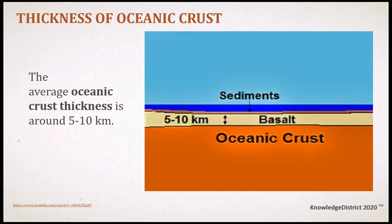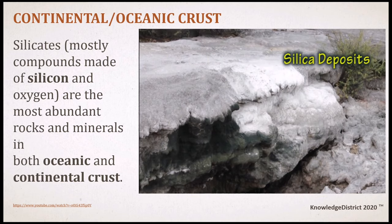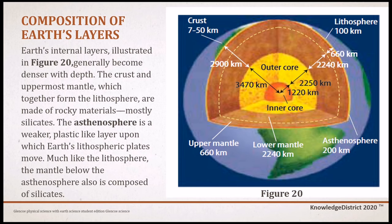The average oceanic crust thickness is around 5 to 10 kilometers. The Earth's crust also has silica deposits — mostly compounds made of silicon and oxygen — which are abundant in rocks and minerals in both oceanic and continental crust. As illustrated in the figure, Earth's internal layers generally become denser with depth. The crust and uppermost mantle, which form the lithosphere, are made of rocky materials, mostly silicates.